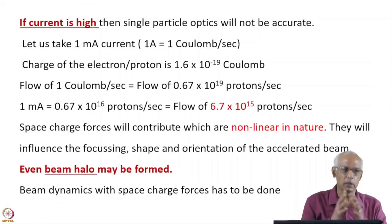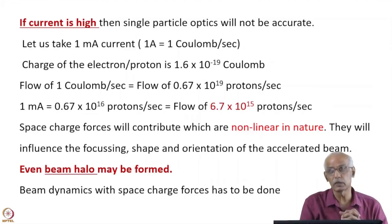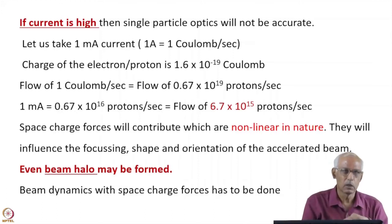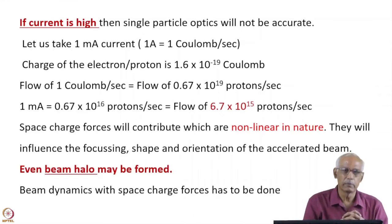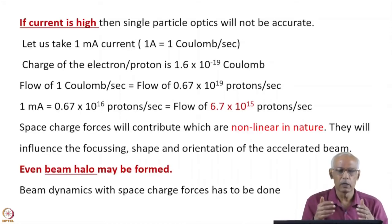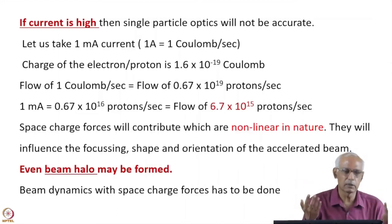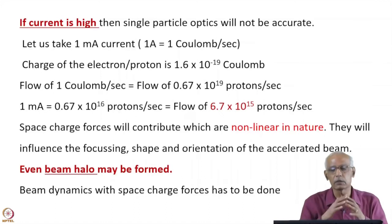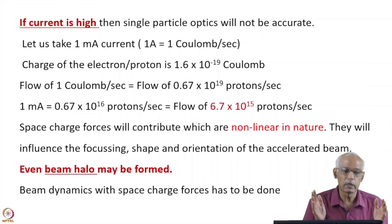So far what I was dealing with was very low current, and low current means space charge effects are not there. But that is not the case when you have large currents. Can all these calculations done so far be valid, or should we do something better? If the current is high — which is the requirement of many experiments — then single particle trajectory calculations are not valid.